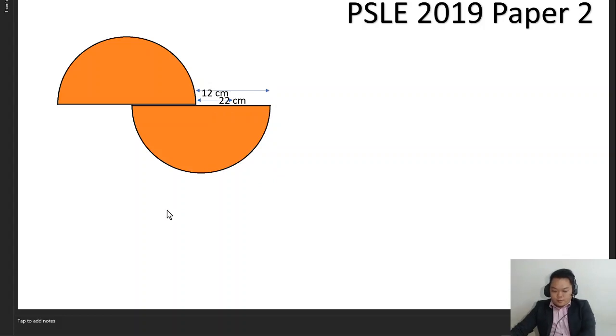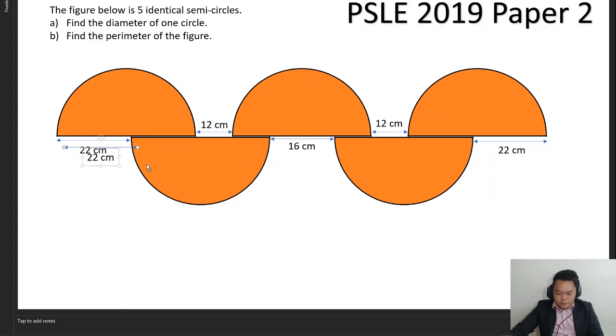So if we are to superimpose this on the figure, this distance will be 22 cm, which means that this distance over here should be 10 cm. Going by the same reasoning, this 22 cm would also be the distance from here to here. Hence we can also say that this portion must also be 10 cm.